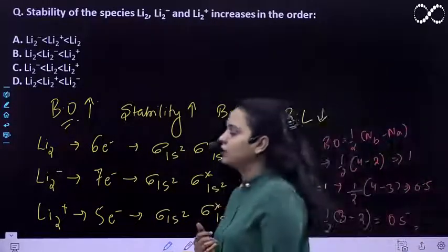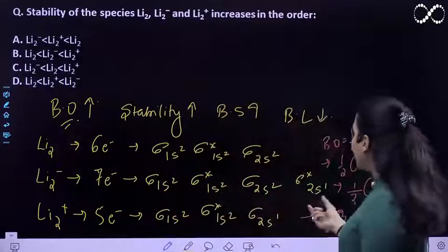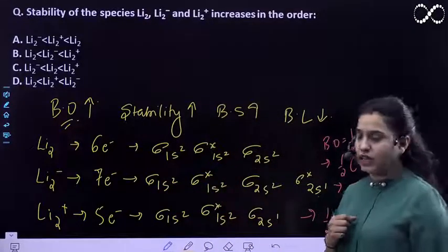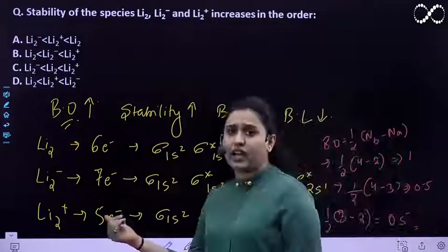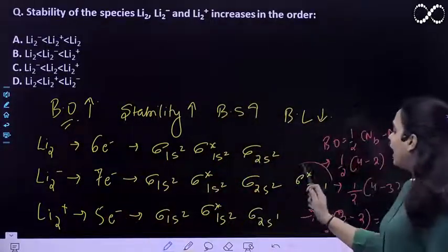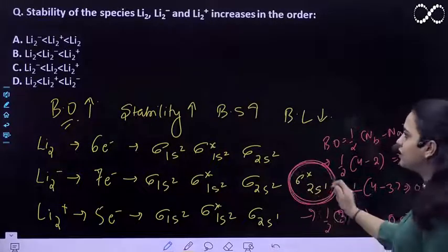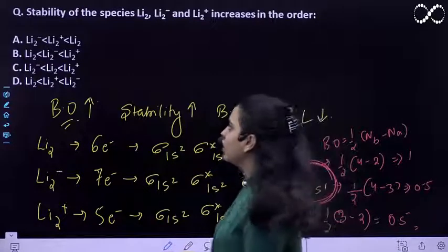If we talk about stability, we should know one thing: the more electrons in anti-bonding, or if there's a negative charge, it will be more unstable. Here the electron that's coming is going into anti-bonding, therefore this species will be less stable.